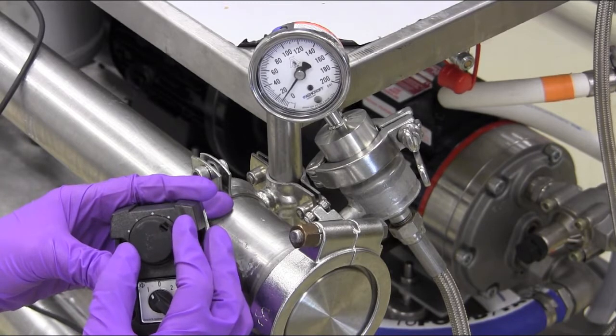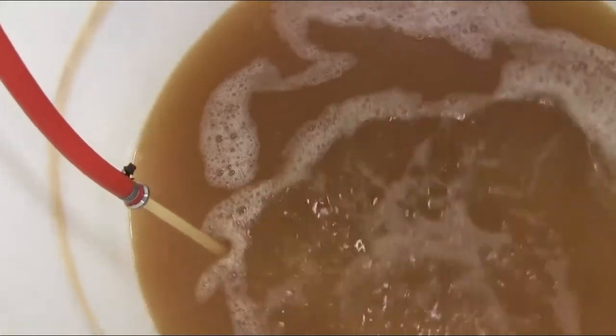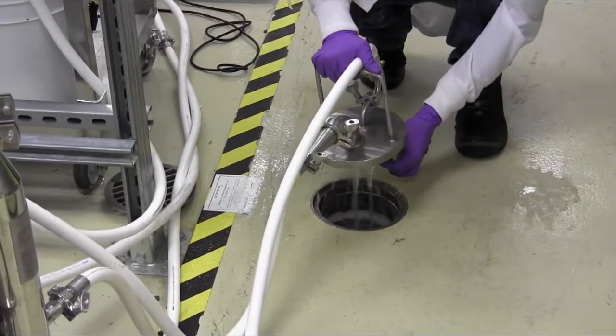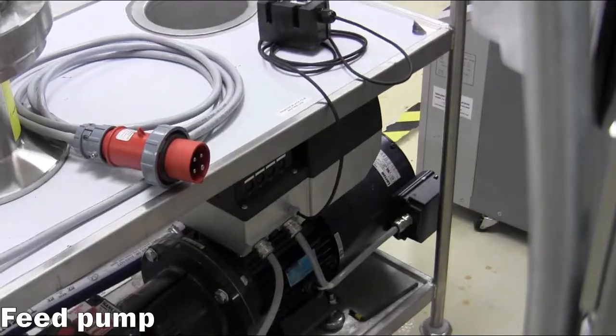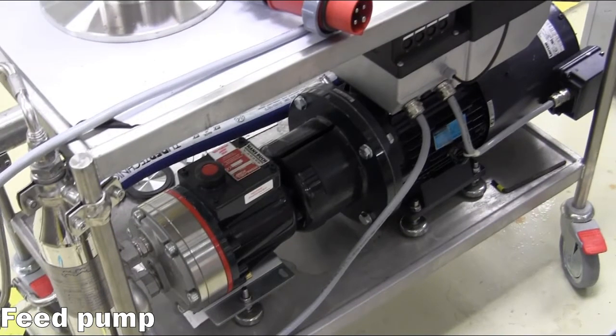This SOP will focus on utilizing the M20 with the larger filter housing to process large volumes of material in microfiltration or ultrafiltration applications. A high-pressure diaphragm pump supplies feed material and can be routed to either the flat membrane housing or the cylindrical housings.